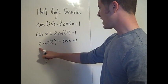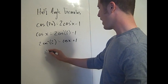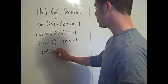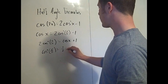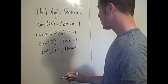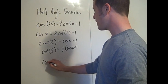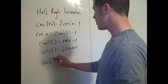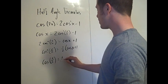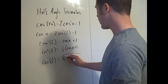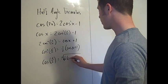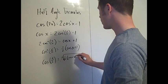Divide both sides by 2, so cosine squared of x/2 equals one-half times (cosine x plus 1). Then take the square root, giving cosine of x/2 — the half angle — equals plus or minus the square root of one-half times (cosine x plus 1).